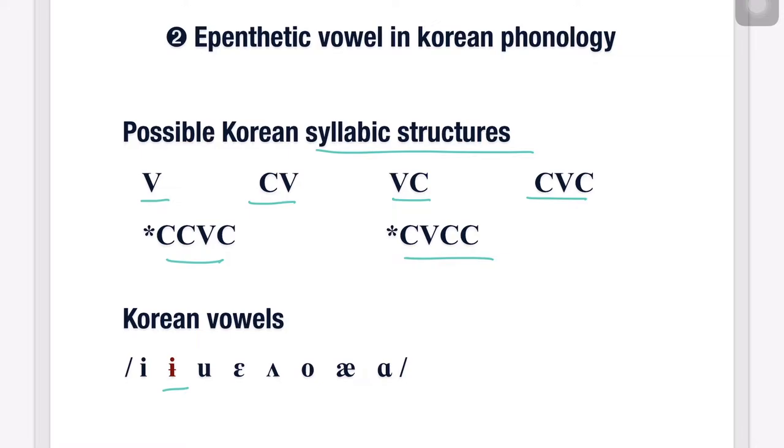What we are going to address is the vowel ɨ in Korean phonology. This is unlikely in English phonology, but in Korean, as the Korean syllabic structure rule blocks CCVC structure, this vowel is inevitably inserted between the two consonants.